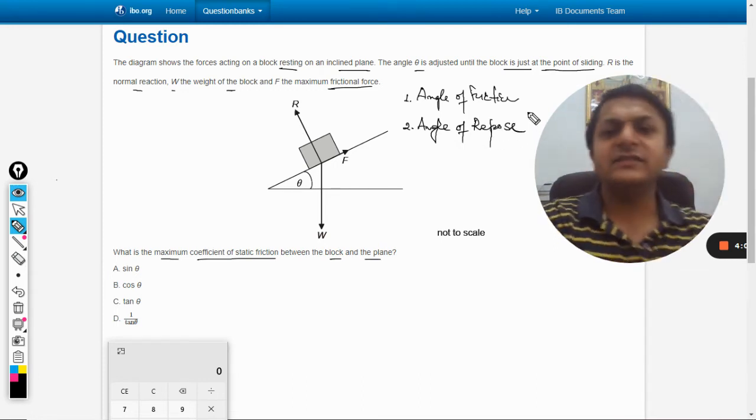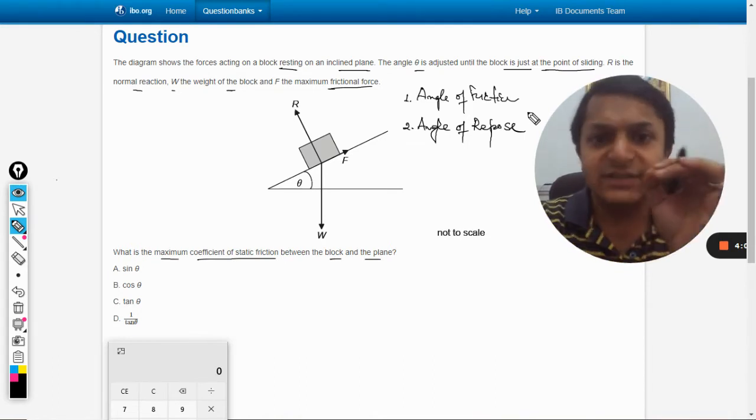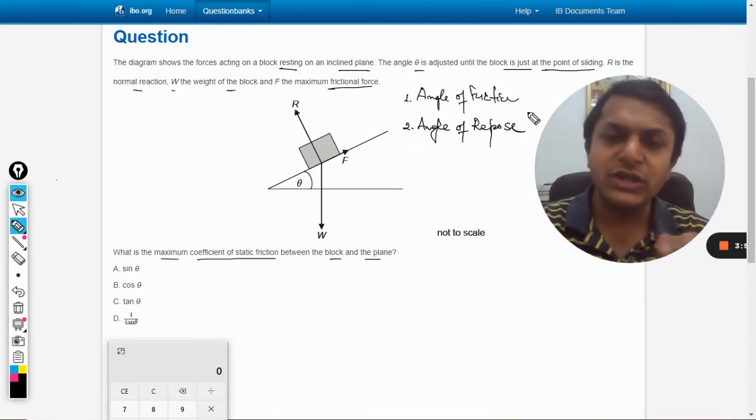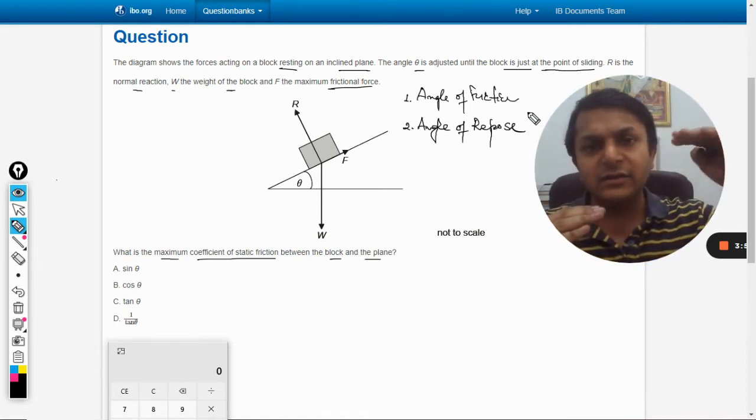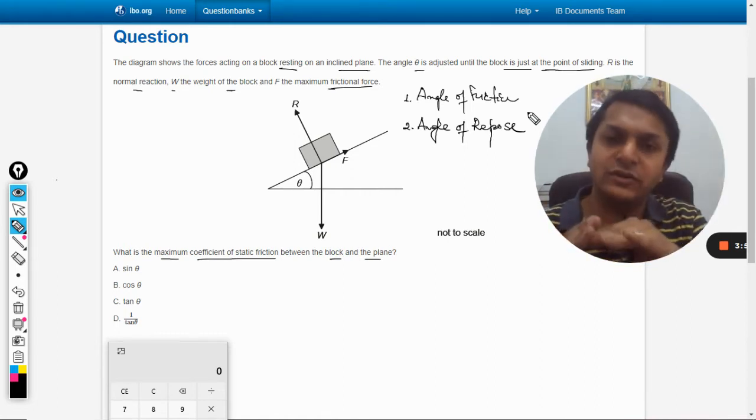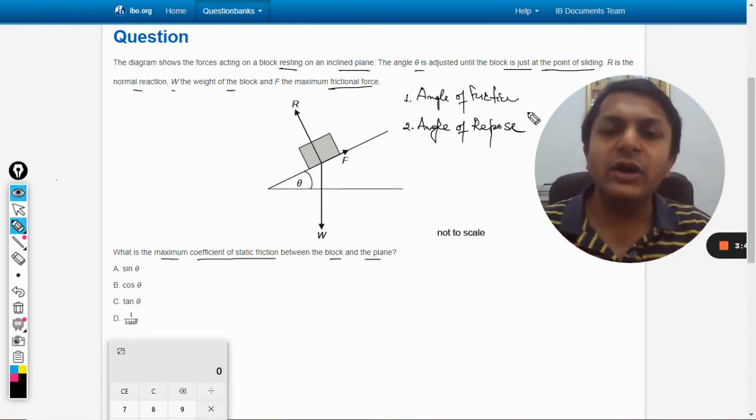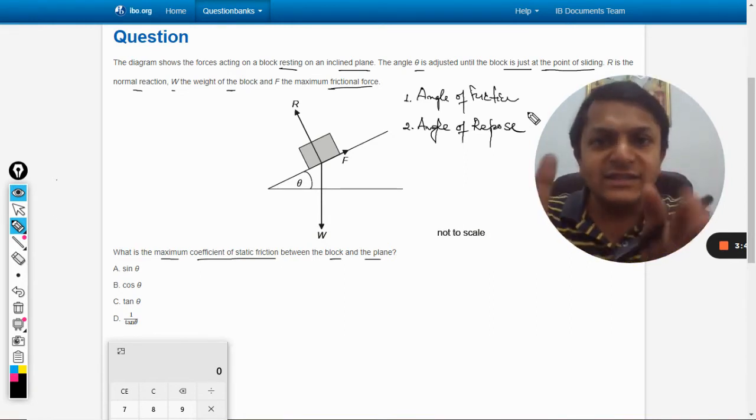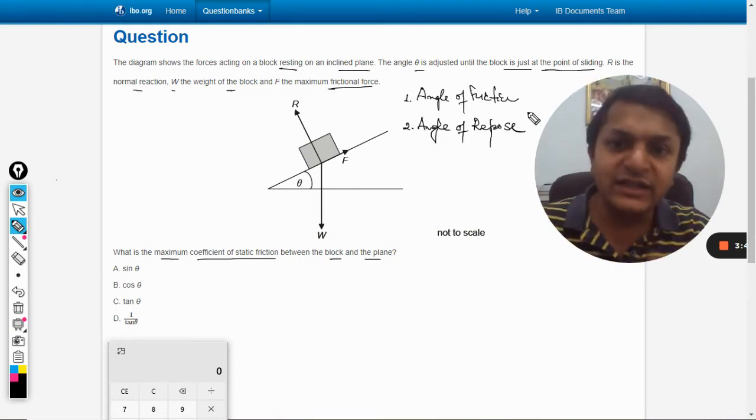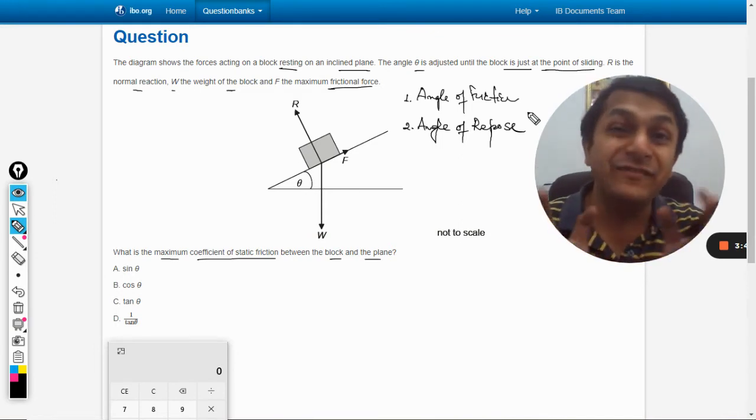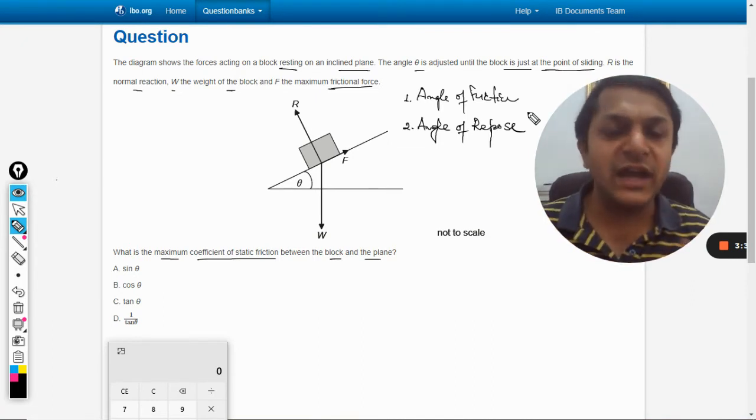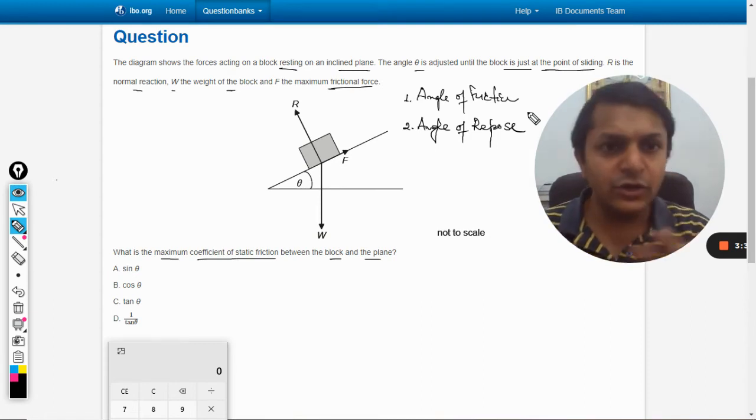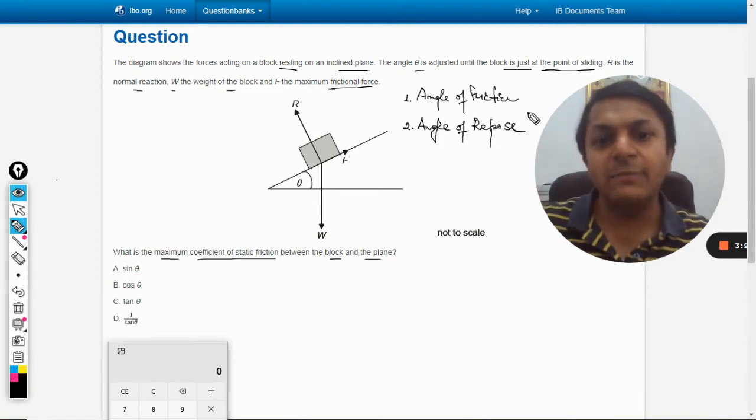The question posed here is the same as that of the angle of repose. Angle of repose is defined as the angle the inclined plane makes with the horizontal when the body is just about to slide. This is what the question is saying - that theta is the angle at which the body is at the verge of sliding. So this angle theta is actually the angle of repose.